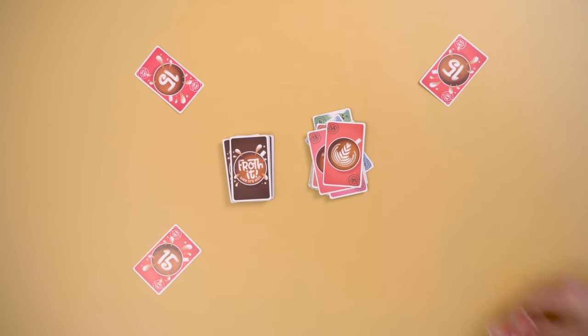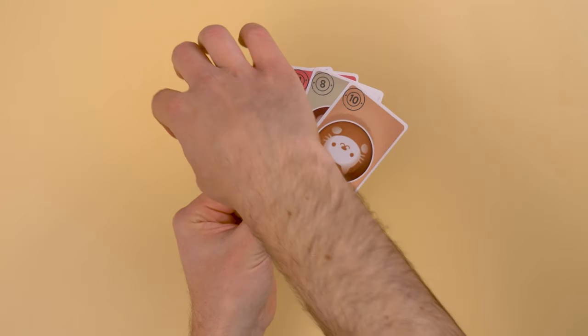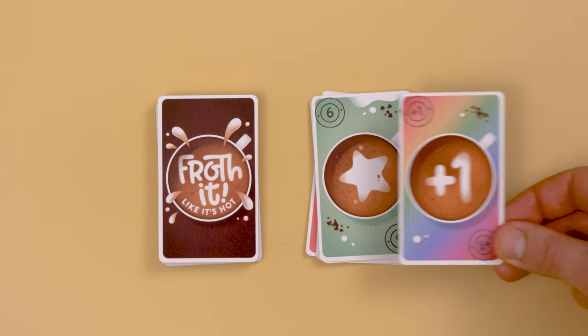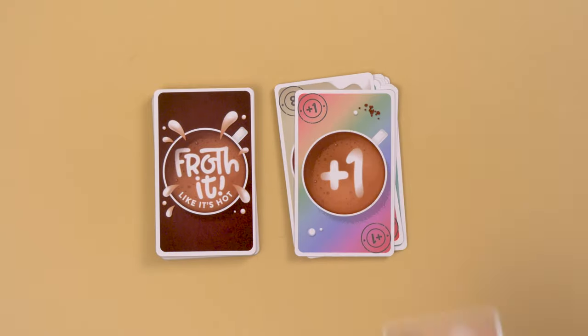If you can reach 15 on your turn, you play your 15 card to win the round. Plus one cards count as latte art cards and can be played on top of any card. If you play the plus one card on a six, this card would now have a value of seven. You can play as many plus one cards as you like on your turn.